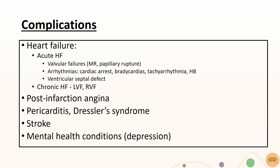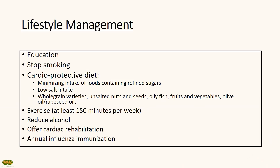Acute pericarditis usually occurs a few days after MI, while Dressler syndrome is an autoimmune condition which occurs a few weeks after. After an MI, lifestyle management is very important. These include education, smoking cessation, promoting a cardio-protective diet, exercise, and reduction of alcohol. Offer cardiac rehabilitation and encourage annual influenza immunization.